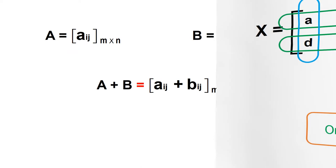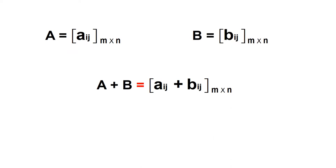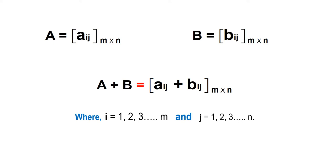In formal notation, matrix A = [a_ij] of order m × n and matrix B = [b_ij] also of order m × n. The addition A + B = [a_ij + b_ij] of order m × n, where i = 1, 2, 3, …, m and j = 1, 2, 3, …, n.